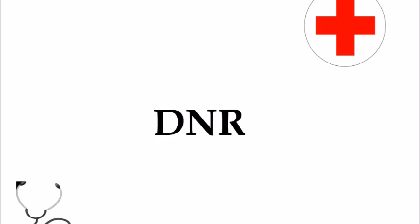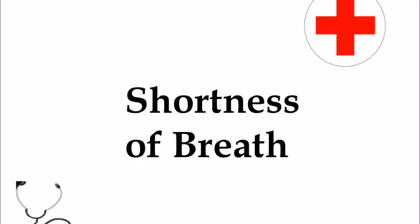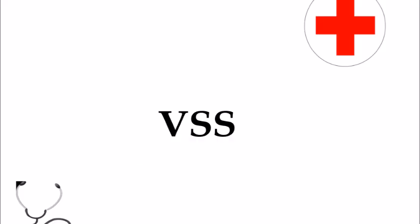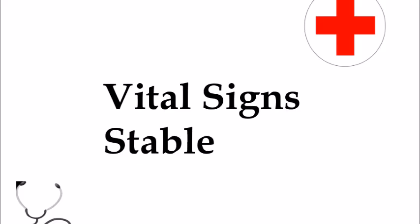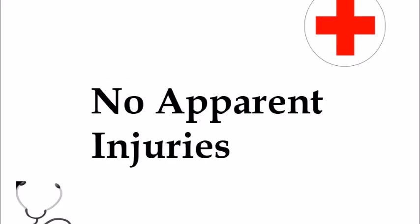DNR is the next one and this is very commonly seen as well and that means do not resuscitate. So if somebody has a heart attack or they go unconscious and their heart stops, you wouldn't perform CPR. You just let them go. SOB is shortness of breath. That one's quite self-explanatory. VSS is vital signs are stable. And NAI, no apparent injuries. Common if somebody falls and you don't find that there's anything wrong with them, there's no injuries that were sustained.